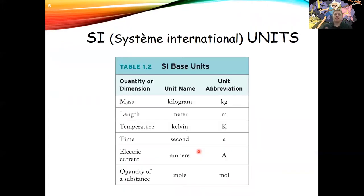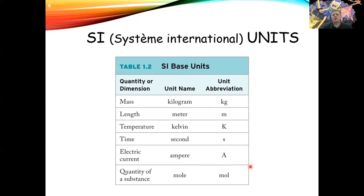Because units are so important, scientists have come up with a standard set called SI units — short for the French term 'système international,' meaning international system of units. SI units include kilograms for mass, meters for length, Kelvin for temperature, seconds for time, amperes for electric current, and moles for quantity of substance. We'll go through several of these today and next time.